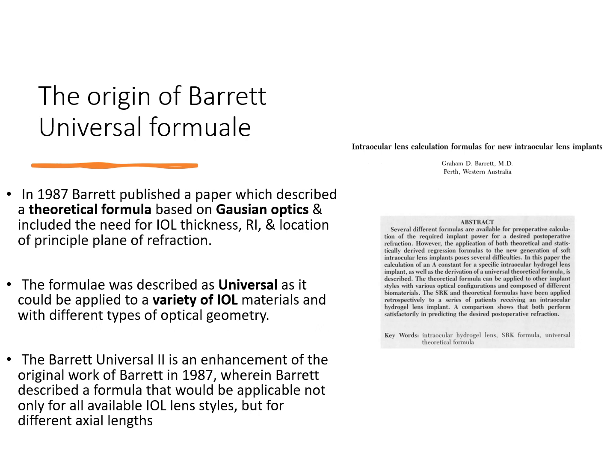The Barrett theoretical formula applies Gaussian optics. In the formula published in 1987, you had to actually enter the IOL thickness, the refractive index, and all details. However, those details are today not readily found. When you implant an intraocular lens, you may know its refractive index, but very few manufacturers spell out the IOL thickness and all those details. So this formula was again remodified in a paper published in 1991, wherein Barrett simplified the formula more.